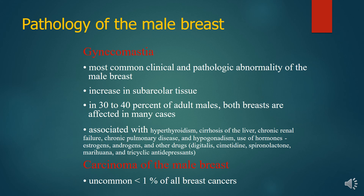Gynecomastia is the most common clinical and pathological abnormality of the male breast, involving an increase in ductal tissue, and is seen in 30 to 40 percent of adult males. It is associated with medications, hypothyroidism, chronic pulmonary disease, hypogonadism, estrogen/progesterone, and spinal cord lesion therapy.